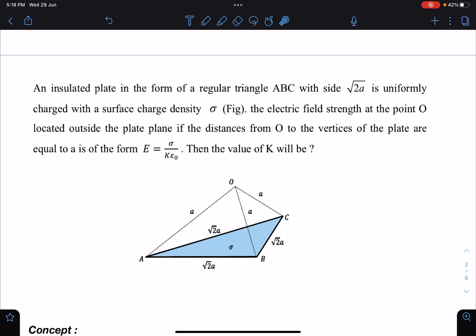The electric field strength at point O located outside the plate, if the distance from O to the vertices of the plate is equal to a, is of the form E = σ/(kε₀). Then the value of k will be?